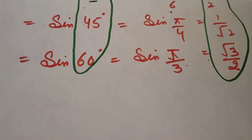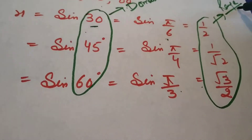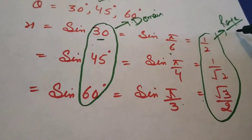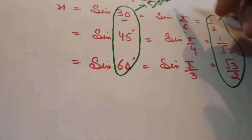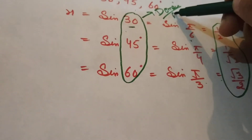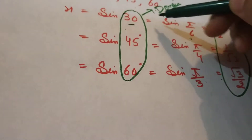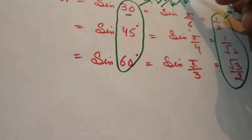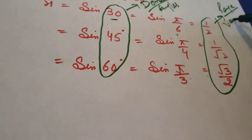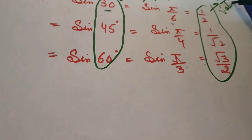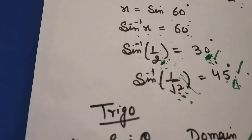In trigonometric functions, the angles are our domain, and the values we get are our range.